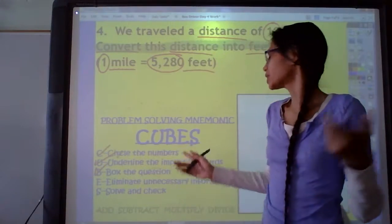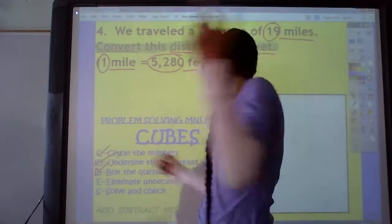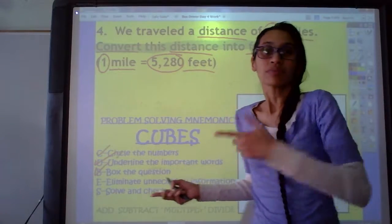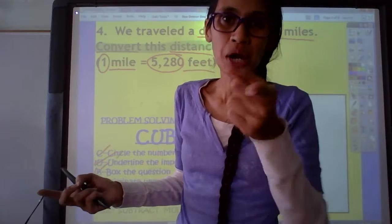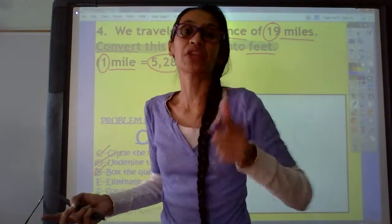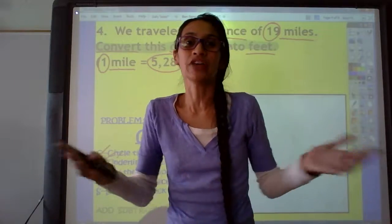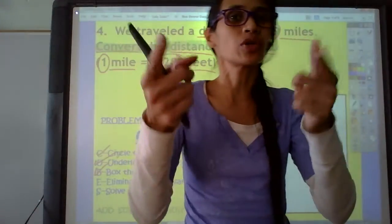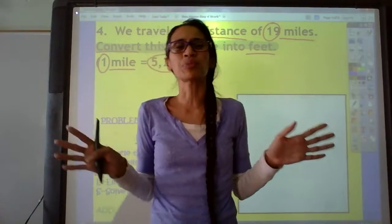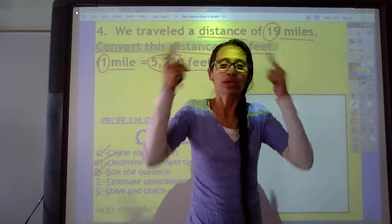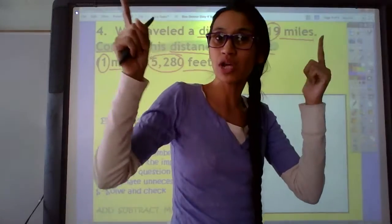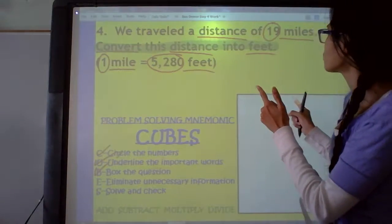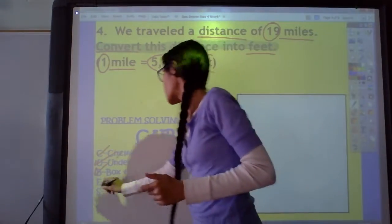The next step is the E step. Eliminate unnecessary information. Remember, I tell you all the time that sometimes problems try to trick you. Math problems try to trick you. Life problems try to trick you. But you're so smart. Smarter than any problem in the world. You can think about it and work it out. Is there anything in this problem trying to trick you? Anything trying to trick you? Nope. We're done with that step.